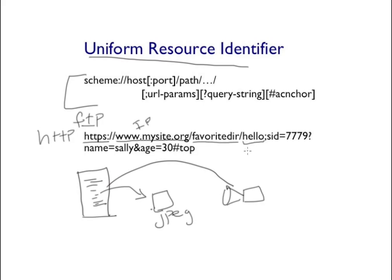The path is the name of the object we are trying to request. After the path, there is an optional set of parameters — these are the URL parameters, marked by a semicolon. This is generally used by servlets to identify, for instance, the session ID. After this, a question mark marks the start of the query string, which is essentially a name-value pair. When you have multiple name-value pairs, these are delineated by an ampersand sign.